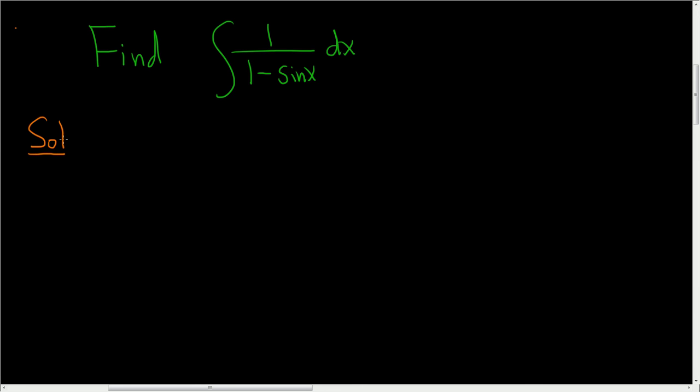So if we try a u substitution, it fails horribly because if u is 1 minus sine x, then du is negative cosine x and there's no cosines here. So there's a completely different strategy that we'll take.